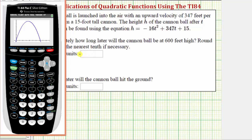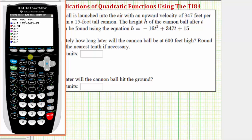The first question is how long later will the cannonball be at six hundred feet high? So let's press y equals, go down to y2 by pressing enter, and we'll enter y2 equals six hundred. By doing this, the points of intersection of these two graphs will tell us when the cannonball is at a height of six hundred feet. Let's go ahead and press graph.